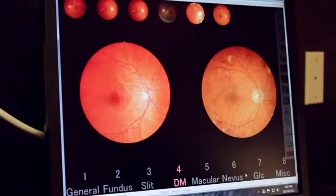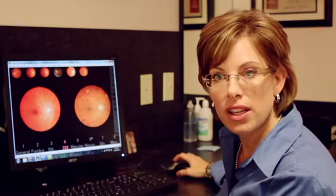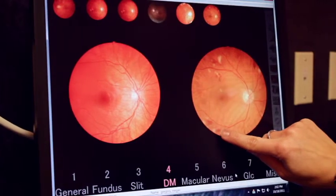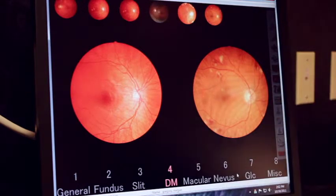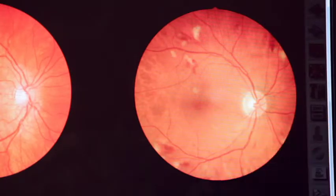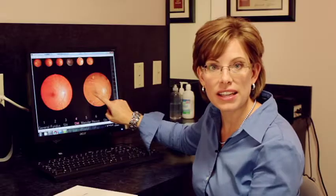Let me show you an example of a patient who came in completely unaware that he had diabetes. You can see here on the photo these small areas are where the blood vessels are actually leaking. Now he has no idea this is happening because it's not affecting the very center of his vision. We like to find this before you notice there's a problem.